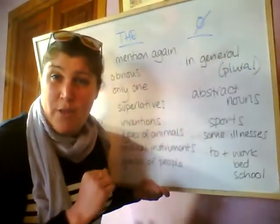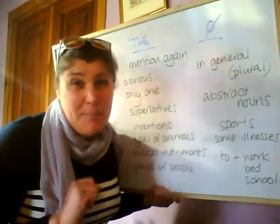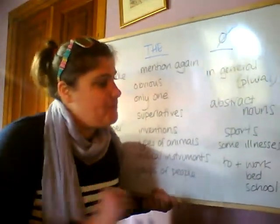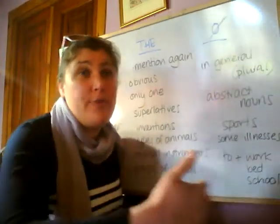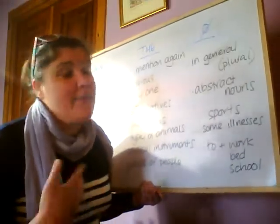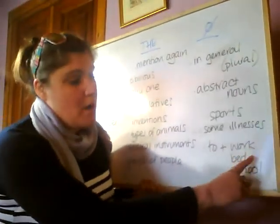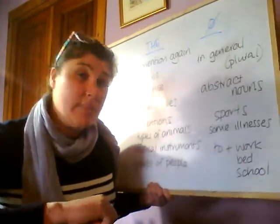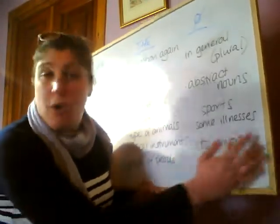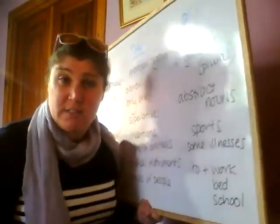Now we don't use an article when we talk in general about things — we use a plural form. For example, 'dogs are cool', 'cats are a little bit weird'. No article with abstract nouns, no article with sports — not 'I like the football', but 'I like football'. With some illnesses: 'I've got flu'. And with expressions using work, bed, or school — not 'go to the bed', but 'go to bed'; 'go to work'.